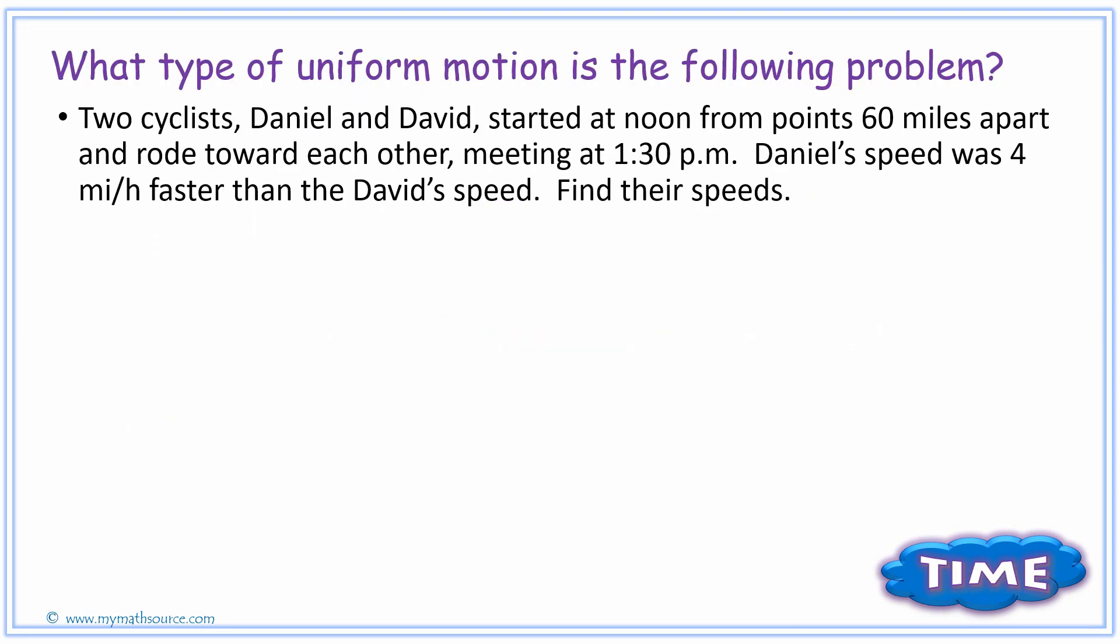For this question here, two cyclists Daniel and David started at noon from points 60 miles apart and rode toward each other, meeting at 1:30 pm. Daniel's speed was 4 miles per hour faster than David's speed. Find their speeds. Well first, it's good to get an understanding of the directions in the motion. Remember, this one here would be an opposite direction because they are starting at points apart from each other and they're going to meet.